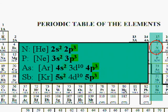Note that the outermost shell for nitrogen is the second shell. Nitrogen is in the second row of the periodic table. The outermost shell for phosphorus is the third shell. Phosphorus is in the third row of the periodic table. The outermost shell for arsenic is the fourth shell. Arsenic is in the fourth row of the periodic table.